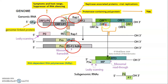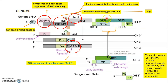ORF3, ORF4, and ORF5 are very important ORFs of Potato Leaf Roll Virus. ORF3 codes for the coat protein (P3), ORF4 codes for the movement protein (P4), and ORF5 codes for the read-through domain protein (P5). The movement protein is responsible for cell-to-cell and long-distance movement of the virus. The coat protein covers the virus, and the read-through domain is responsible for aphid transmission and virus stability.